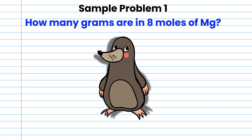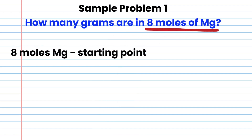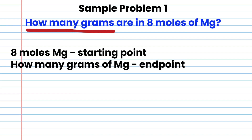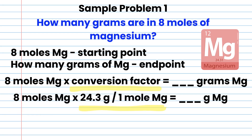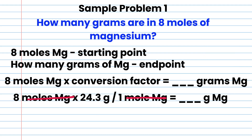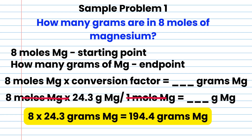Conversion from moles to grams. Sample problem 1: how many grams are in 8 moles of magnesium? Starting point is 8 moles of magnesium; end point is grams of magnesium. The conversion factor has moles in the denominator and grams in the numerator: 24.3 grams per one mole of Mg, since the atomic mass of Mg is 24.3 amu. Cross out the moles, and the result is 8 times 24.3, which equals 194.4 grams of Mg.